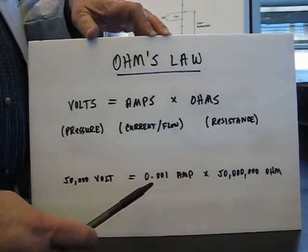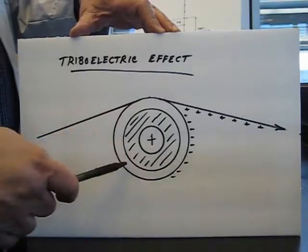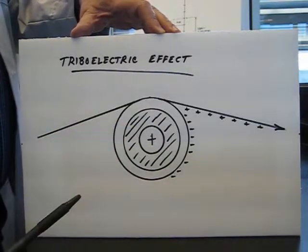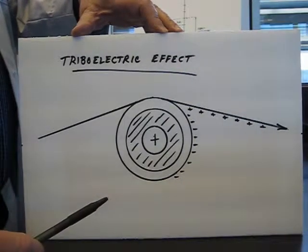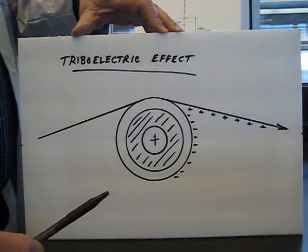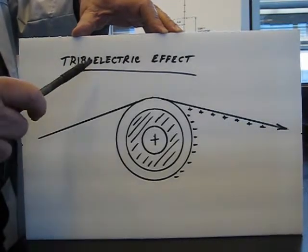Now rubber covered rollers or insulated covered rollers have one additional static effect that metal rollers do not have and that's called the triboelectric effect. Tribo is friction so we have electricity generated by friction.